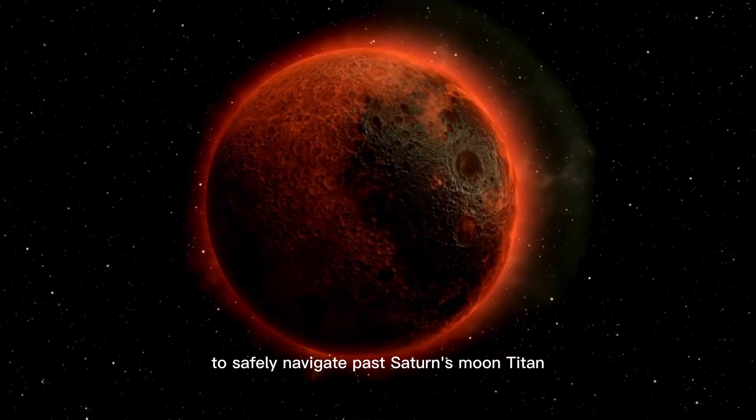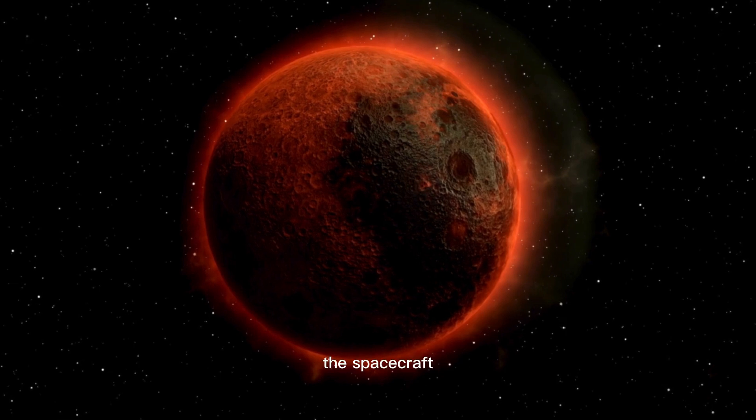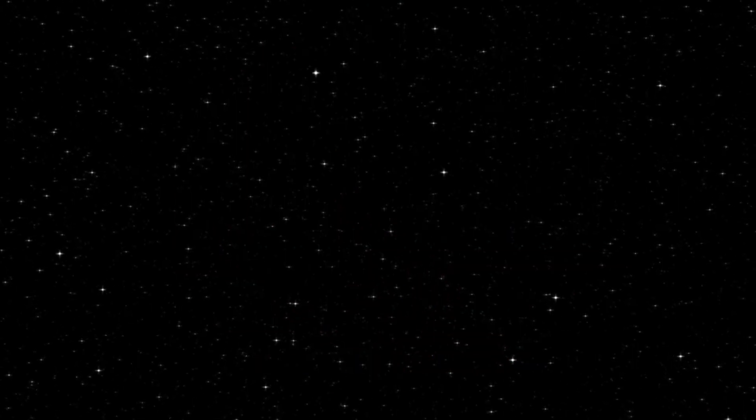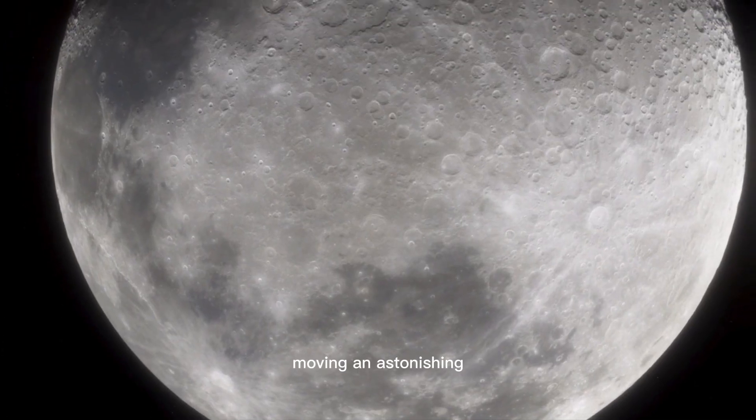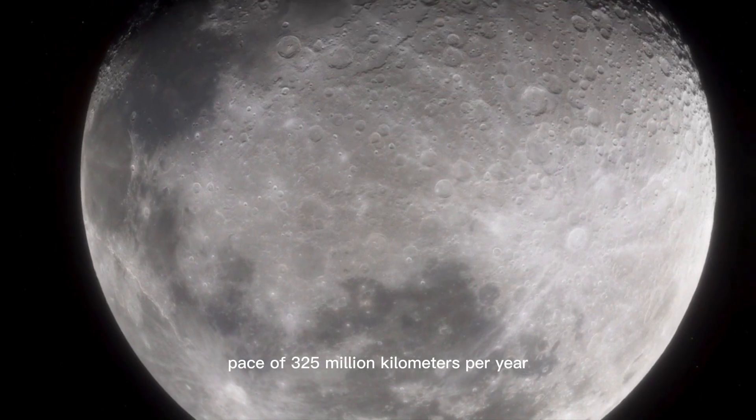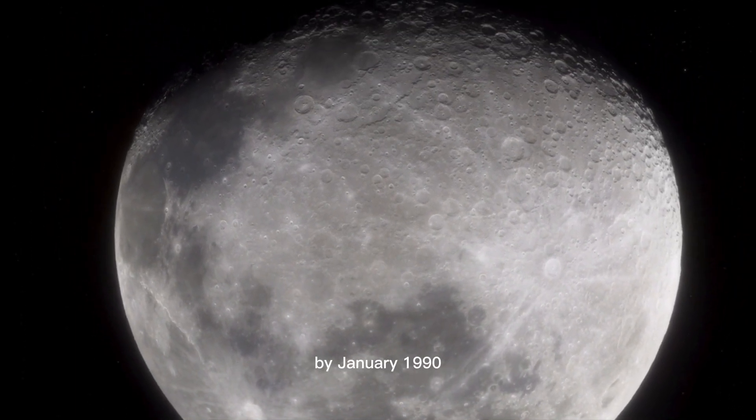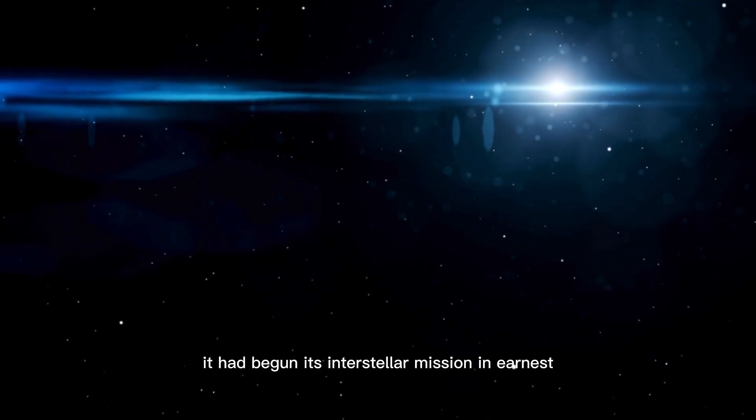To safely navigate past Saturn's moon Titan, the spacecraft performed several crucial course corrections. After its planetary encounters, Voyager 1 shifted its focus toward interstellar space, moving at an astonishing pace of 325 million kilometers per year. By January 1990, it had begun its interstellar mission in earnest.